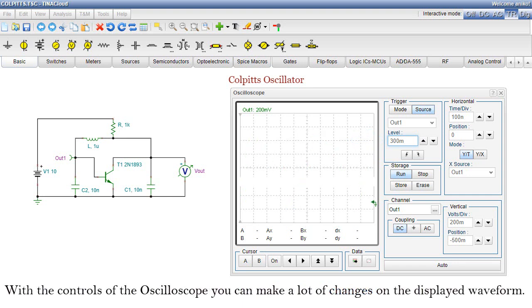With the controls of the oscilloscope, you can make a lot of changes on the displayed waveform. Here are a few.